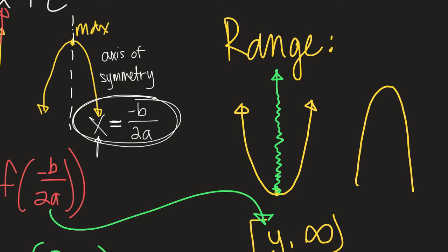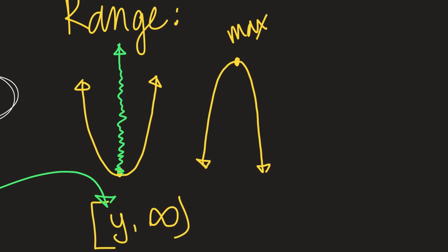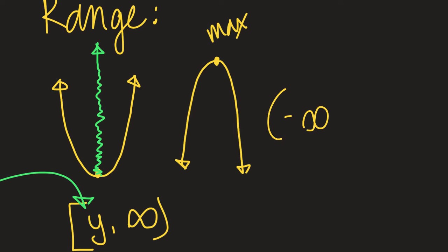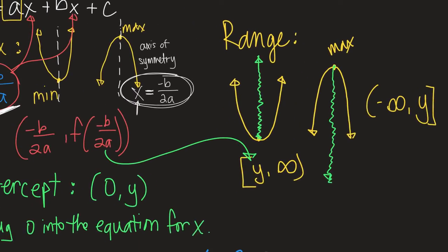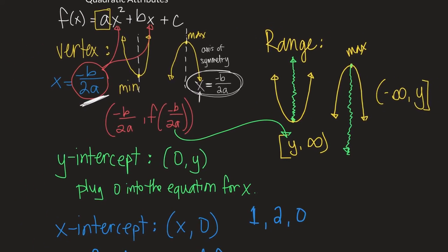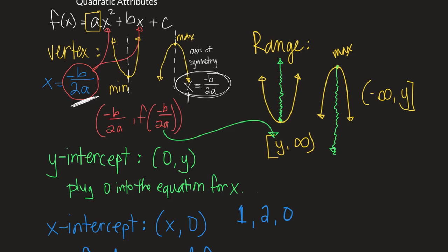For a negative graph — a parabola that opens down — your vertex is now a maximum point. The range goes from negative infinity to whatever that Y value is at your vertex. So a negative graph starts at negative infinity and comes up to a maximum value of the Y at your vertex. The vertex is a pretty important point: we use it for the X and Y coordinates, for maxes and mins, and for ranges.